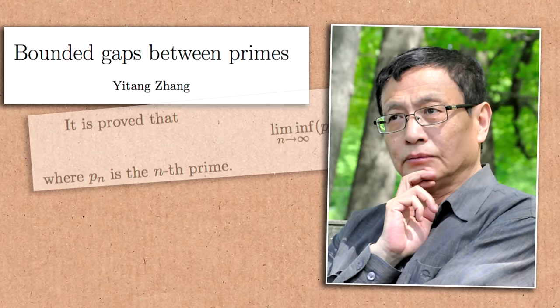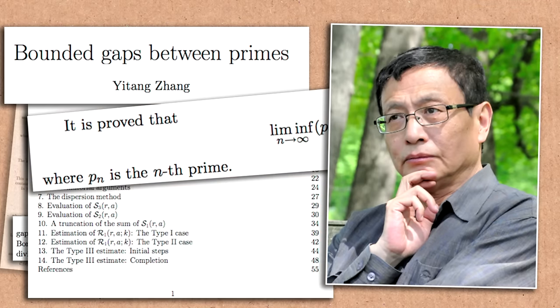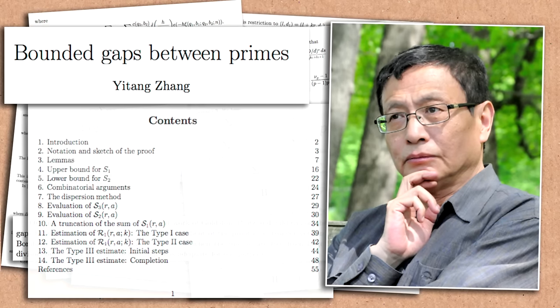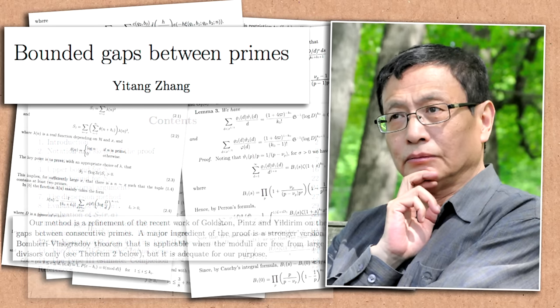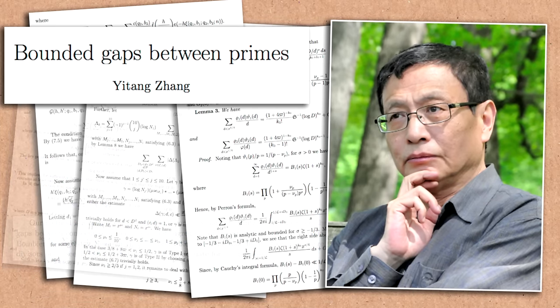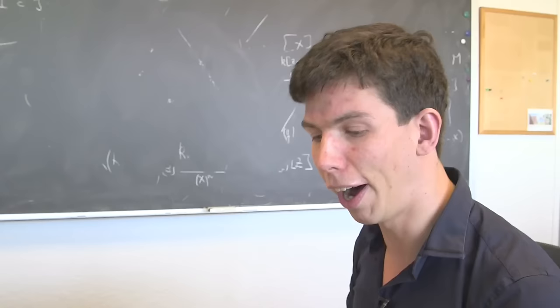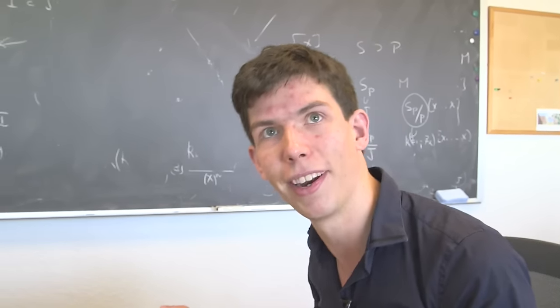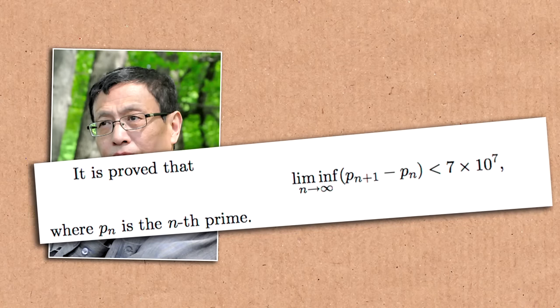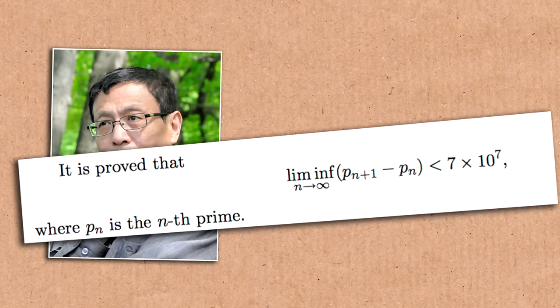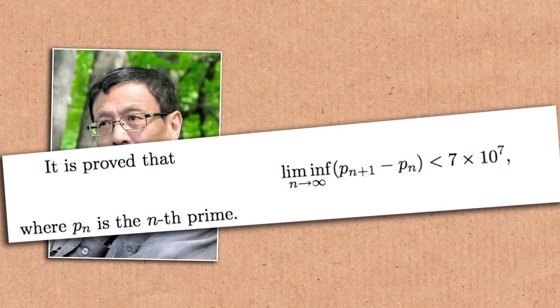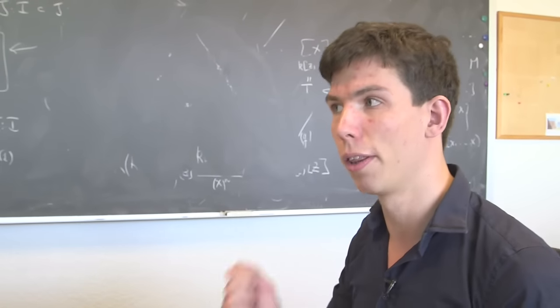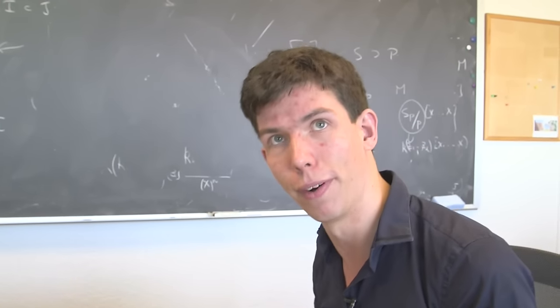There was an absolutely huge breakthrough by Yitang Zhang relatively recently in 2013. He showed that although he couldn't prove the twin prime conjecture that 2 is a gap infinitely often, and he couldn't prove 4 is a gap infinitely often, he showed that either 2 or 4 or 6 or 8 or some number less than 70 million has to be a gap infinitely often. The gap wasn't 70 million—it was somewhere between 2 and 70 million, but he didn't know what it was. He couldn't say which one comes as a gap, but he showed at least one occurs infinitely often.